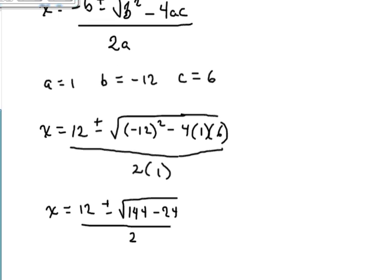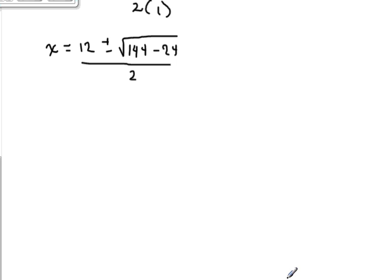All right, let's scroll down here a little further. Give us some room. So we're going to wind up with x equals 12 plus or minus the square root of 144 minus 24 is 120 divided by 2.